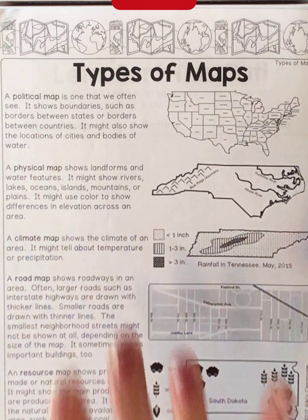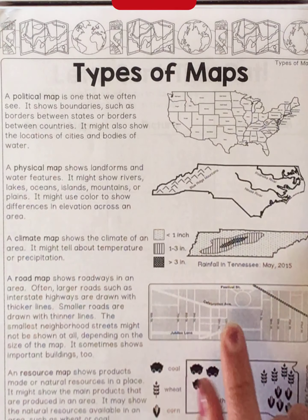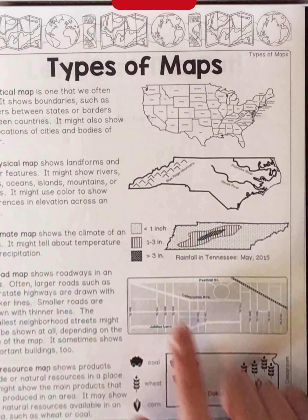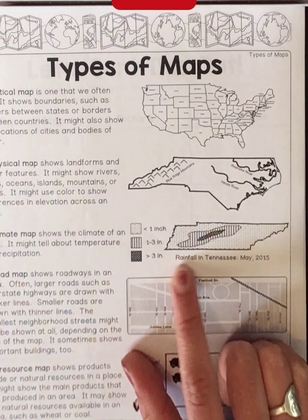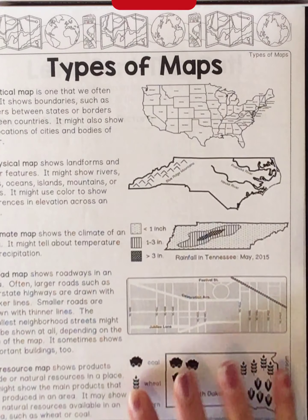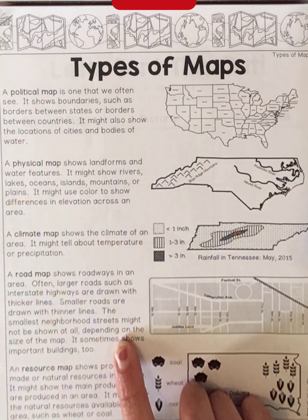A climate map shows the climate of an area — it tells you about the temperature and precipitation. It might show you an area and how much rain it receives or how much snow they get each year. For example, you can see this shows the rainfall in Tennessee for May 2015.